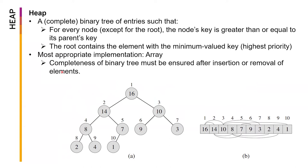Because of the completeness definition of heap, the most appropriate implementation is an array. An array-based implementation enforces the implementation of a complete binary tree. That's why an array is also suitable to implement a heap. When we do insertion or removal of elements, we still have to check the completeness of the binary tree — completeness meaning all elements are pushed to the left, so the left child has to be filled in first.